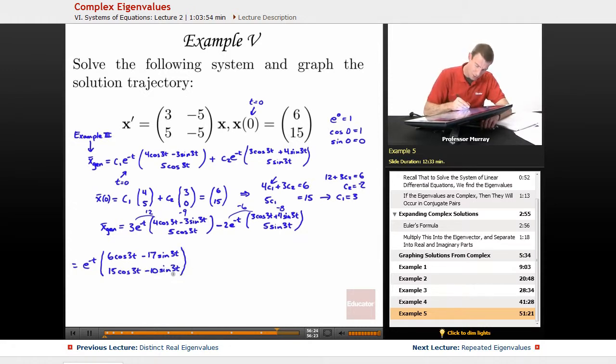And then in the bottom I see I've got 15 cosine 3t minus 10 sine of 3t. So that's my solution, and I'm going to try to graph that.